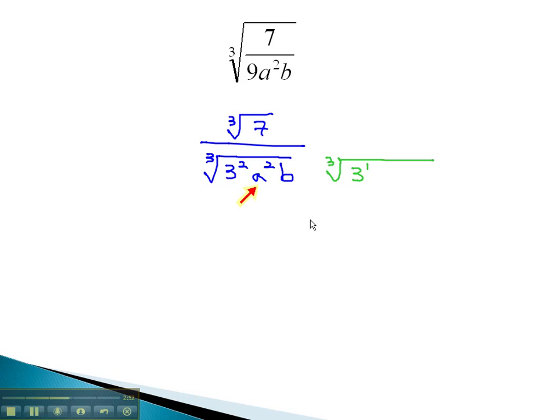We need 1 more a to give us 3, which we'll be able to divide by the exponent, or by the index of 3.